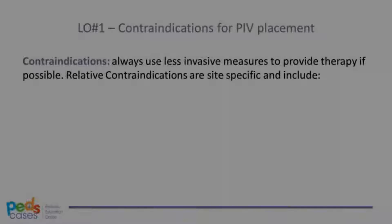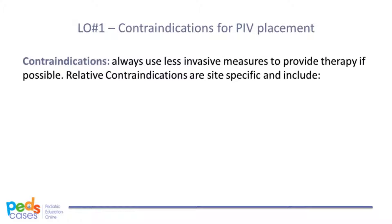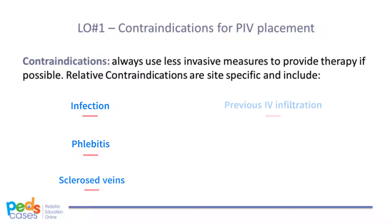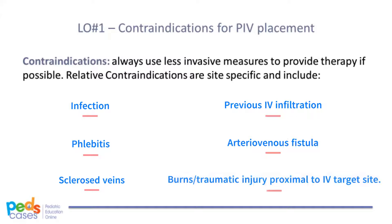Next, let's talk about contraindications. In general terms, if therapy can be given via less invasive measures, such as enteral administration, they should be. Relative contraindications to peripheral IV insertion are site-specific and include infection, phlebitis, sclerosed veins, previous IV infiltration, arteriovenous fistulae, and burns or traumatic injury proximal to the intended insertion site.